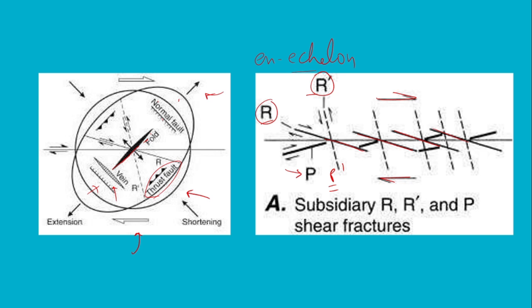Now if I talk about the shear sense or dipping direction of Riedel and conjugate Riedel, I would say this Riedel shear is actually a synthetic fault and this R prime is actually an antithetic fault. What do you mean by synthetic and antithetic? Synthetic faults are those minor faults or secondary faults which are actually dipping towards the direction of main fault, while in antithetic, the faults are dipping in the opposite direction to that of the primary or main fault.